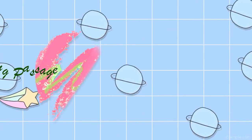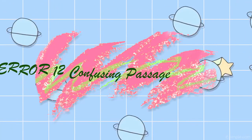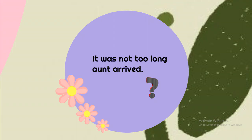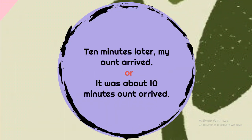Error 12: Confusing. Example: 'It was not too long and arrived.' This is an unnatural sentence — it may have been translated directly from Thai. There are many ways to write it naturally and correctly. For example: '10 minutes later, my aunt arrived.' Or: 'It was about 10 minutes, then aunt arrived.' Or: 'It was about 10 minutes later.'